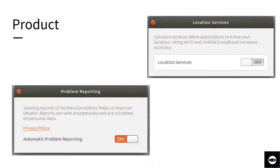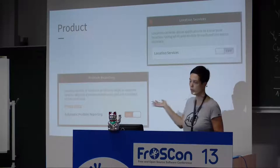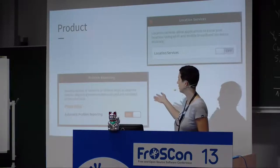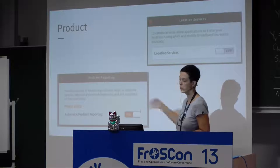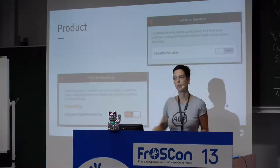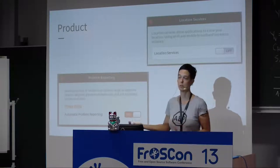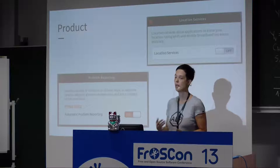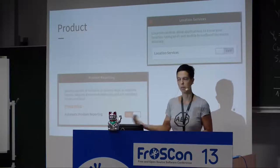There are many touch points in open source software development where you interact with user data. For example, in Ubuntu, you have the feature of problem reporting and location services, and you can give consent whether you want to participate or not. These are small features you need to care about implementing in your products.